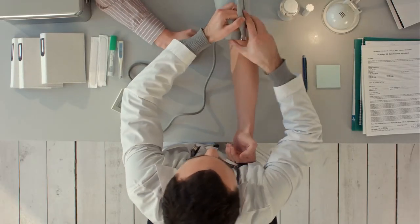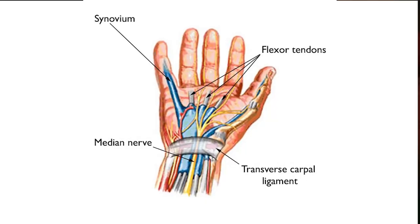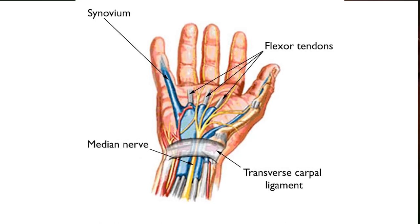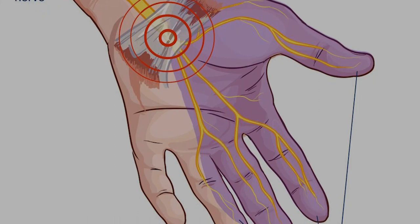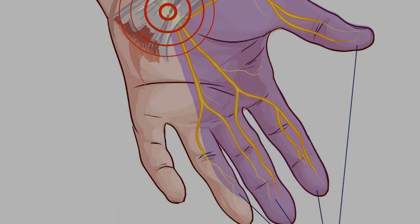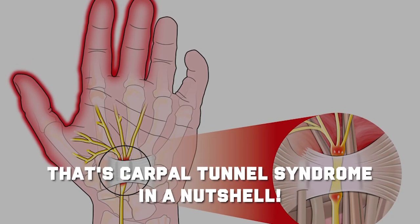Alright, let's ditch the medical dictionary and talk about carpal tunnel in a way that doesn't involve putting you to sleep. Imagine a tiny highway called the median nerve running through a narrow tunnel in your wrist. This tunnel is like a crowded subway car at rush hour, and sometimes the poor median nerve gets squished.